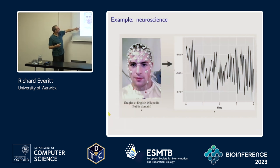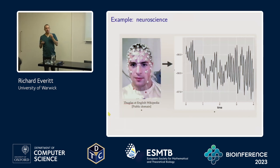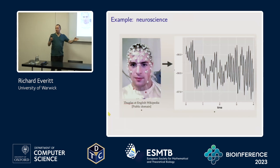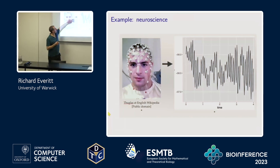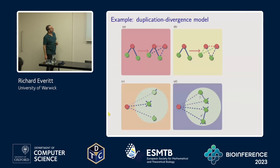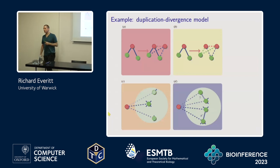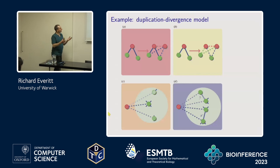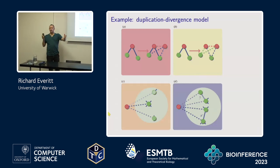There's a bunch of different bio-inference type models where this might apply. One is in neuroscience where we have models for brain activity evolving over time. The parameters might be like how information is exchanged between different groups of neurons, and we have an SDE model that gives you a way of modelling what data might look like from a sensor placed on the head.